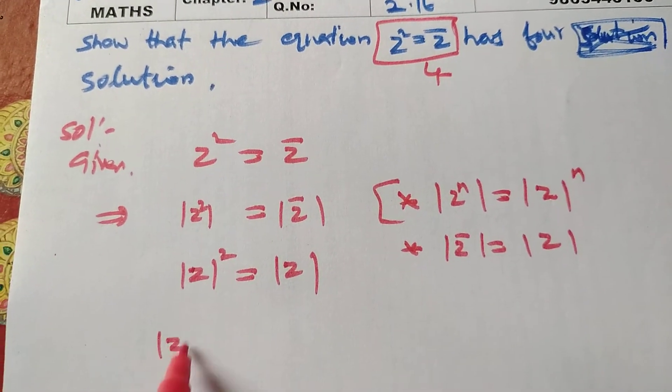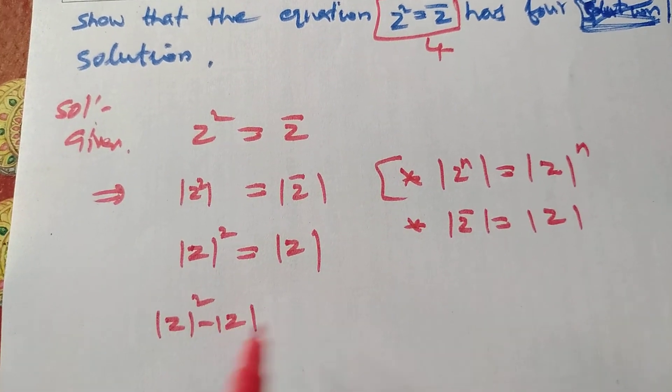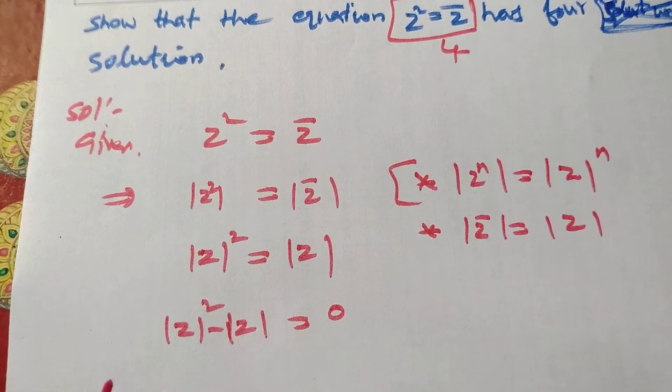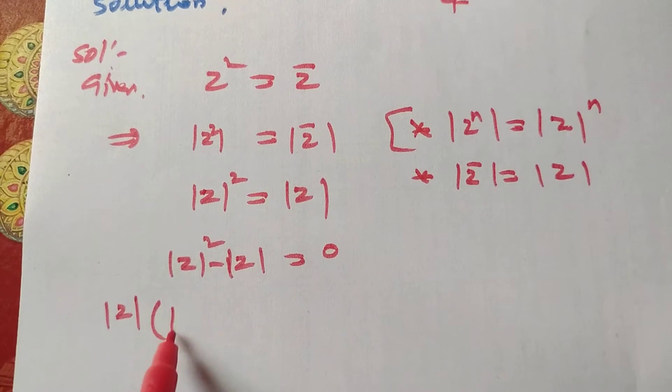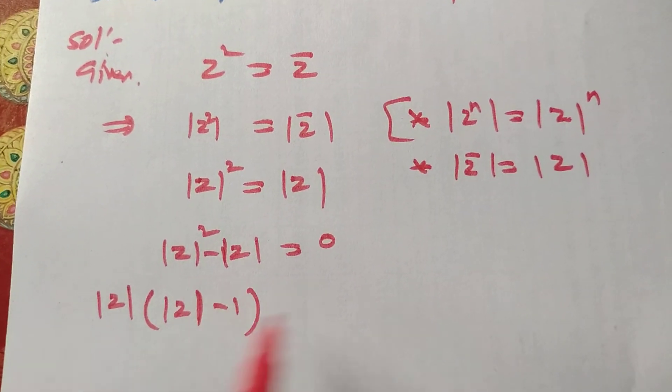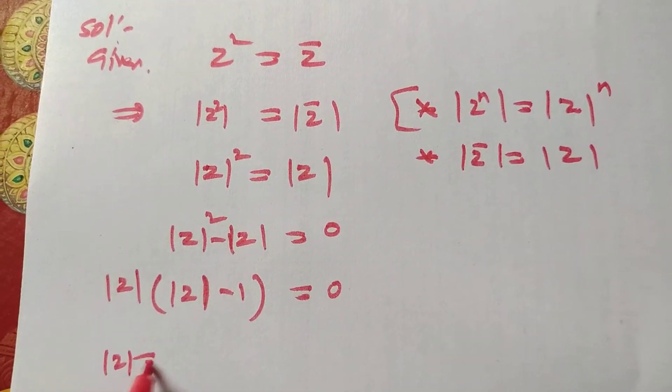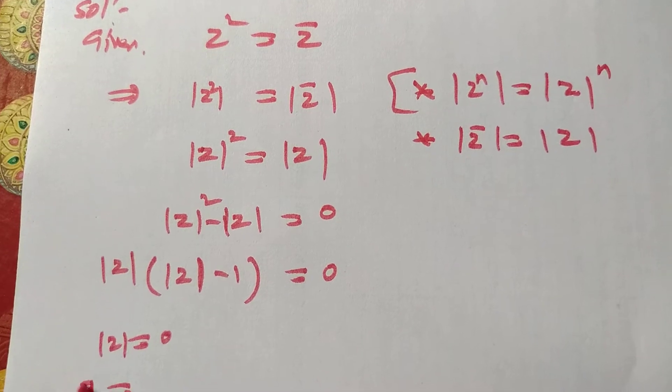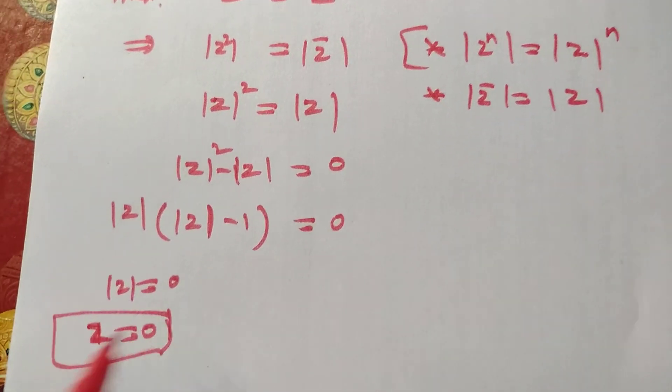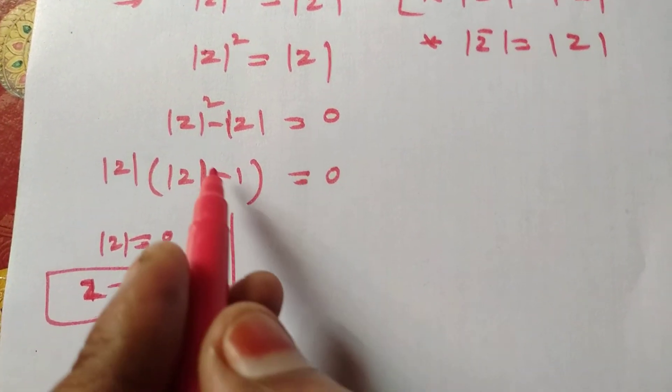Now we have modulus of z squared minus modulus of z equal to zero. So modulus of z times modulus of z minus 1 equal to zero. So modulus of z equal to zero, which means z equal to zero. Next, the second factor.